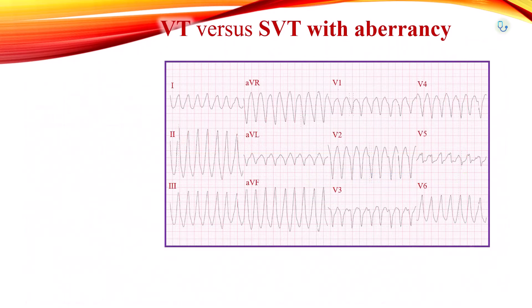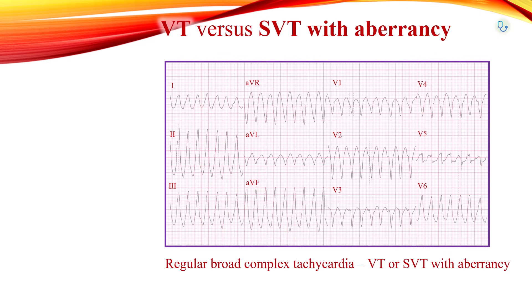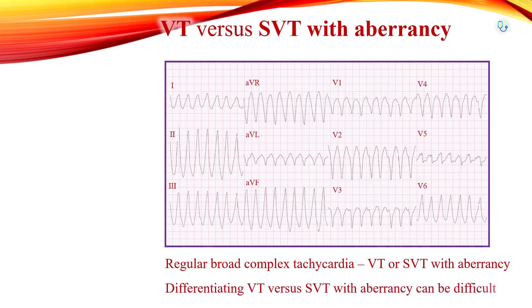Regular broad QRS complex tachycardia can be of ventricular origin, or supraventricular origin with aberrancy due to bundle branch block. Differentiating between VT versus SVT with aberrancy can be very difficult. It is crucial to be able to make this distinction, as therapeutic decisions are anchored to this differentiation.